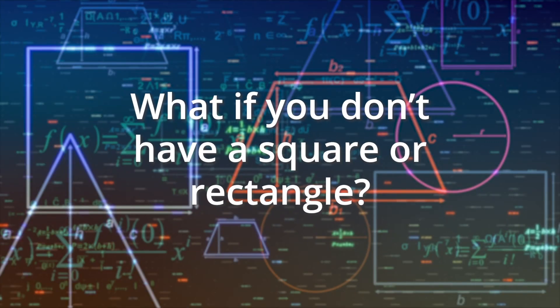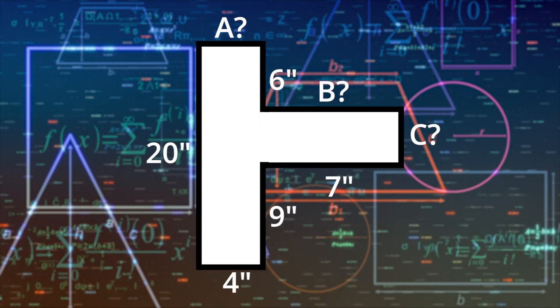Squares and rectangles with all different perimeters and areas are all around us. But what if you don't have a square or a rectangle? What if you're trying to find the perimeter and area of an odd-shaped space? Like this one. As you can see, it's not a rectangle, and it's not a square. If you look closely, you'll see that there are actually two rectangles and one square that make up the shape.